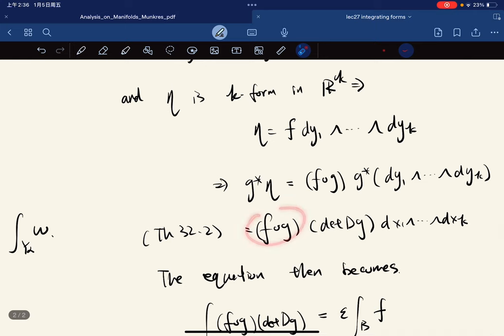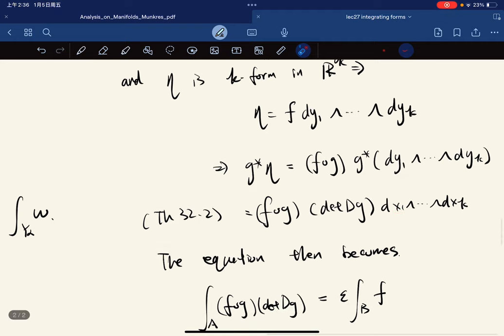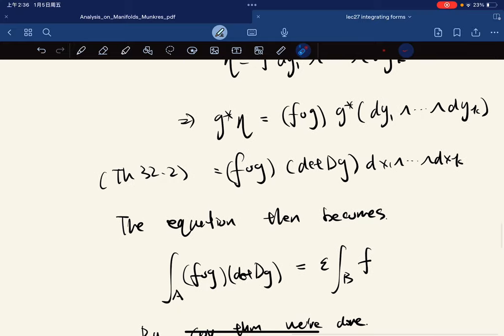This is F of G times determinant of DG over DX. So it used to be Y, now it will be X. Now,